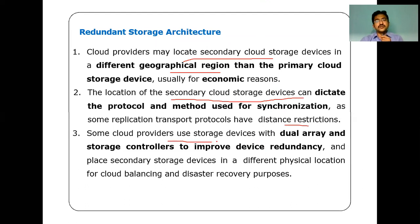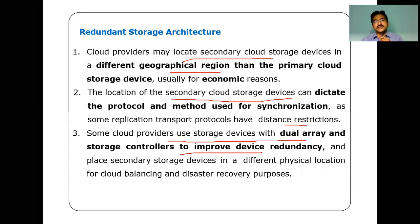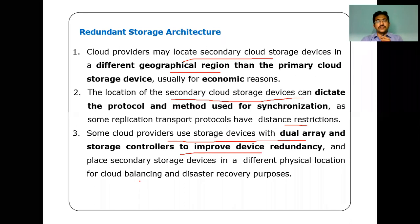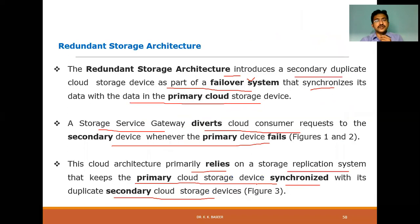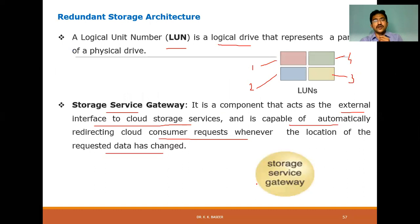The second point is that the location of secondary cloud storage devices can dictate the protocol and method used for synchronization, as some replication transfer protocols have distance restrictions. Third, cloud providers use storage devices with dual array and storage controls to improve device redundancy. Secondary storage devices are also placed in different physical locations for load balancing and disaster recovery.